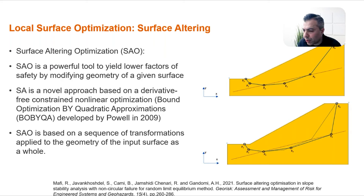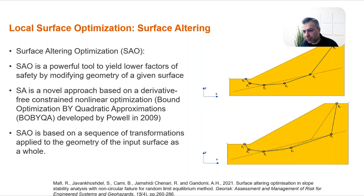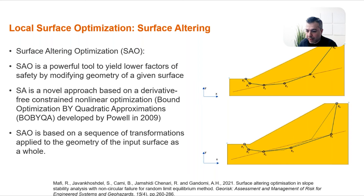In Slide2 2018 we released one of Rocscience's innovations called Surface Altering Optimization. It is a local optimization — a very powerful tool to yield a lower factor of safety by modifying the geometry of the critical slip surface. It's a novel approach based on a derivative-free constrained nonlinear optimization method called BOBYQA, developed by Powell in 2009. We have published journal papers explaining these algorithms, since many of these methods are unique to us. Surface altering is based on a sequence of transformations applied to the geometry of an input surface as a whole.